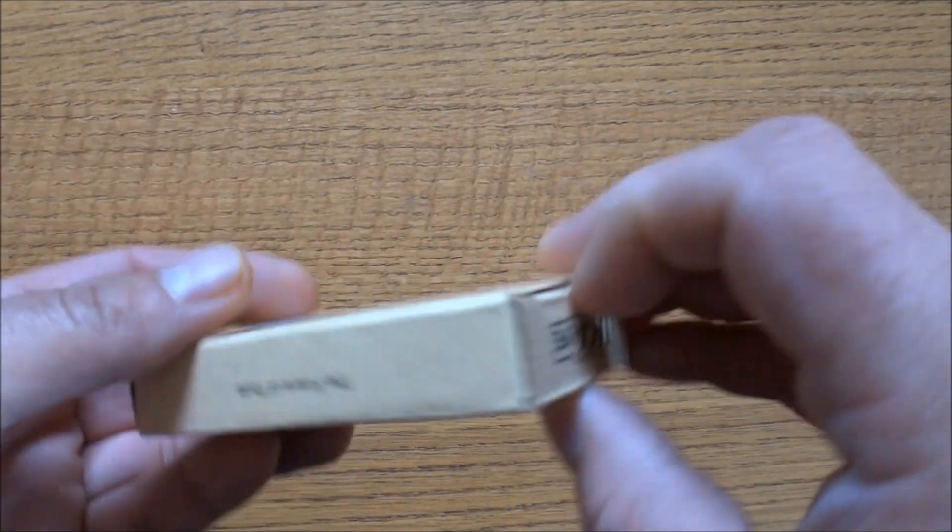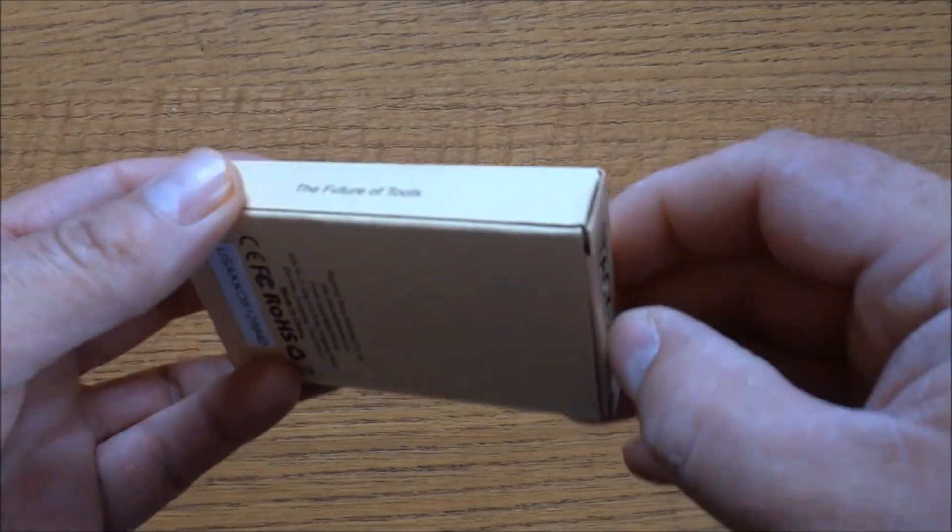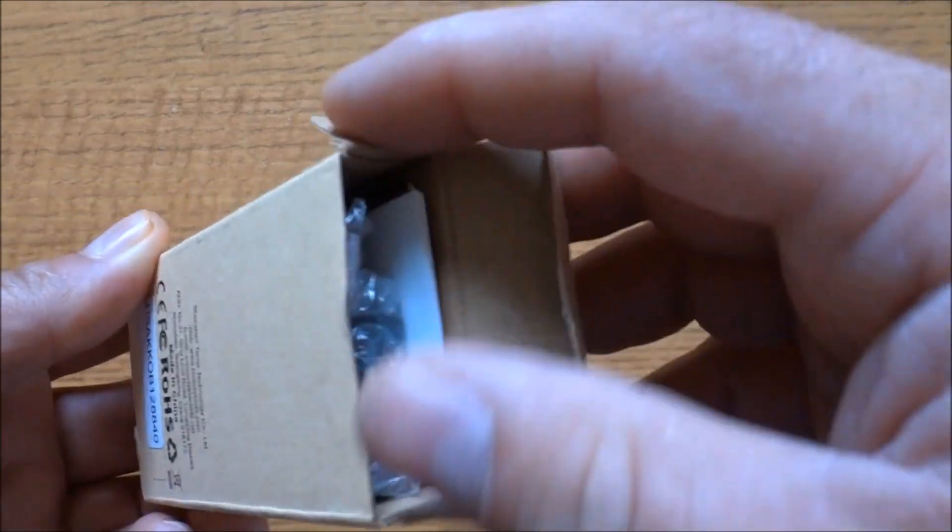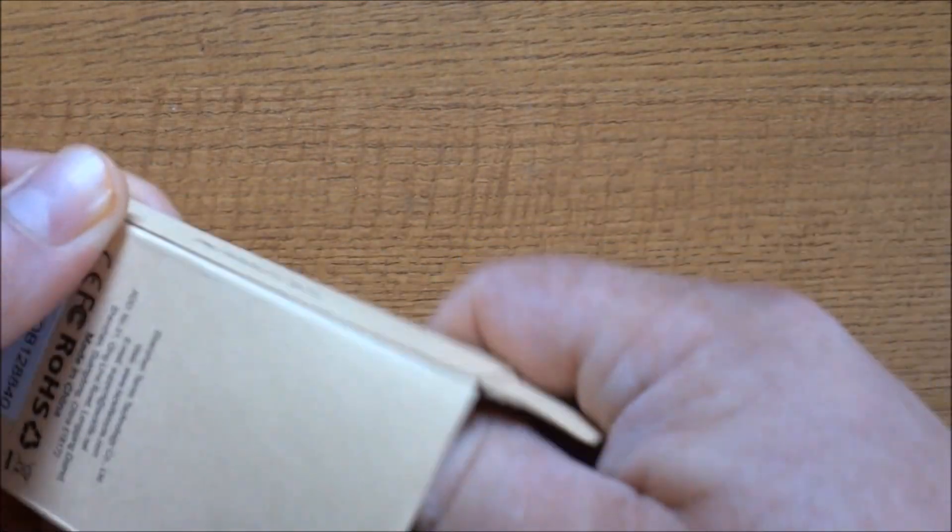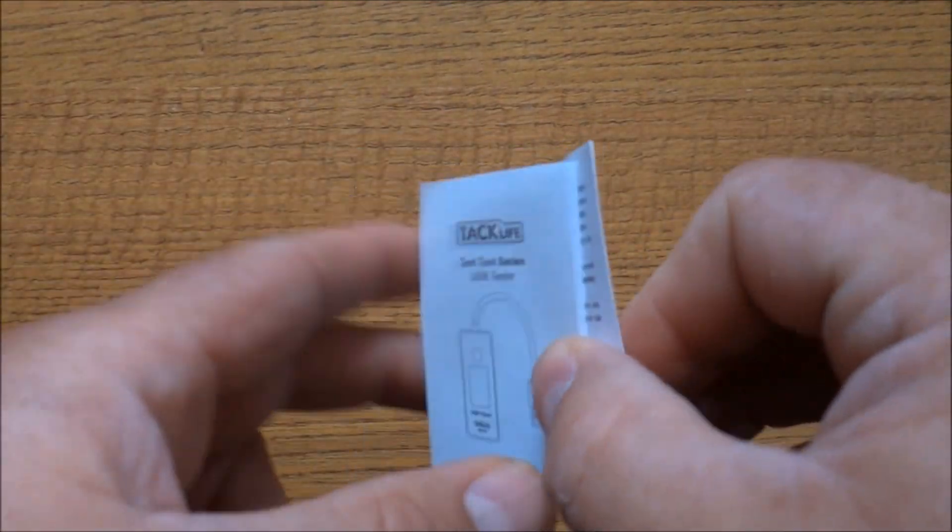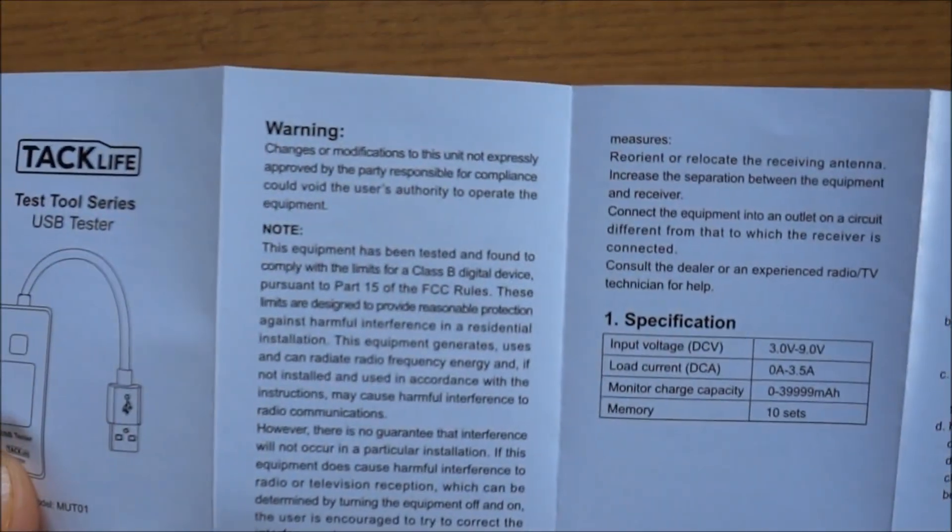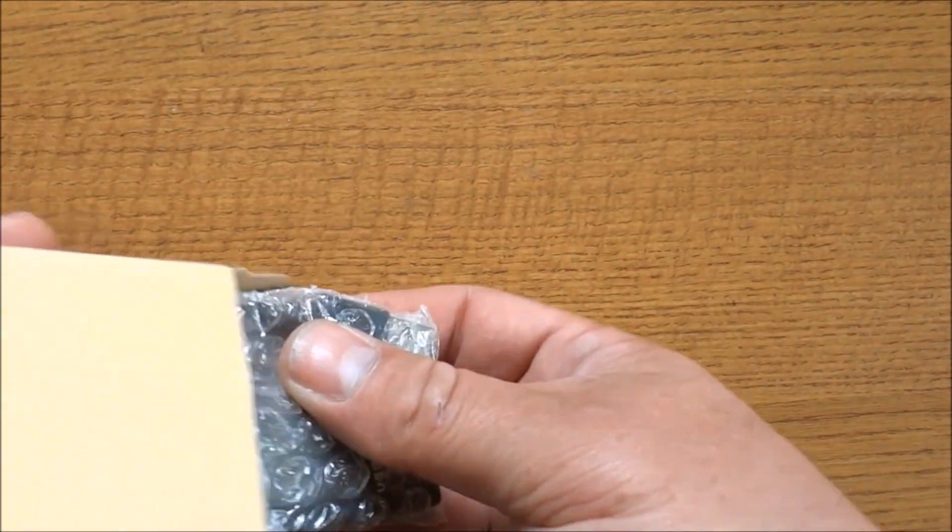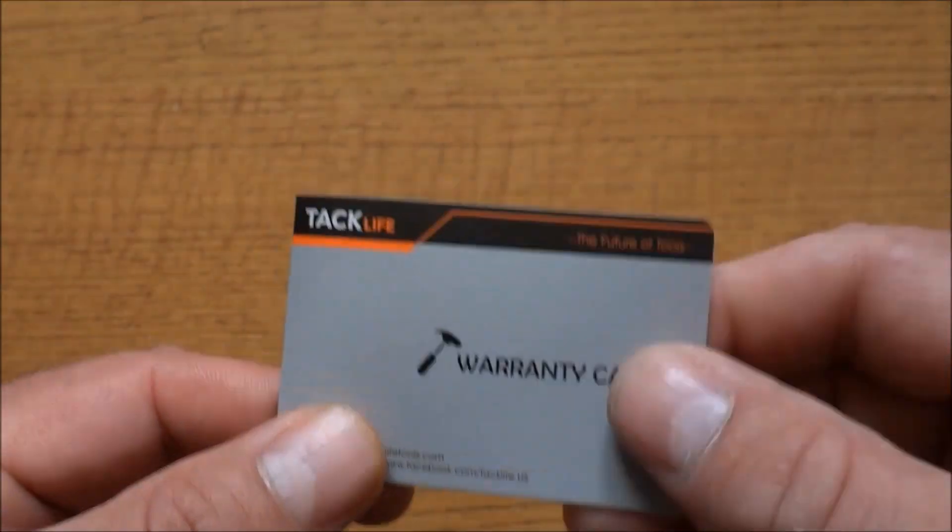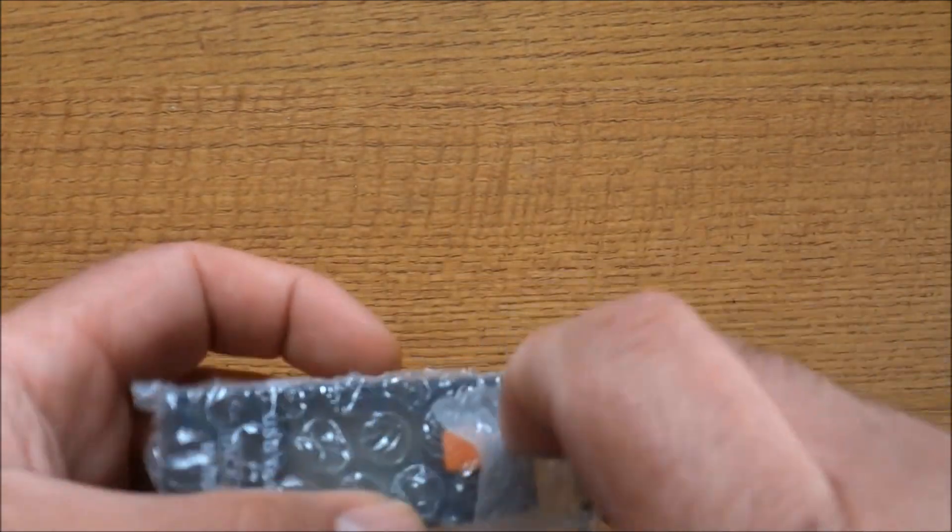There's really nothing on the box as you can see. Inside you get the instruction manual, which is pretty easy to read and understand in multiple languages, a warranty card, and in some bubble wrap you get the tester itself.